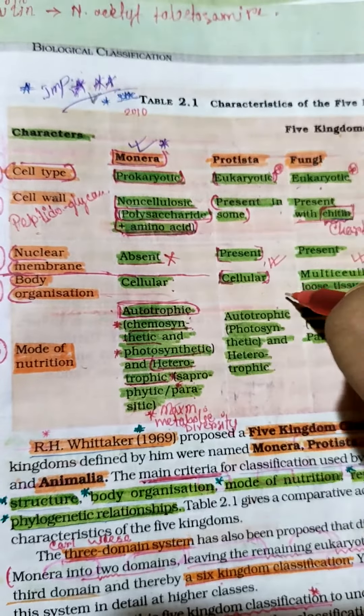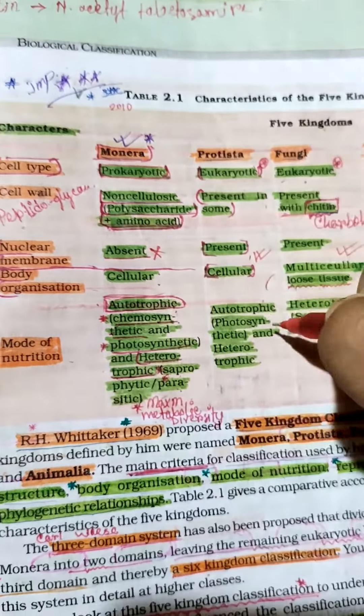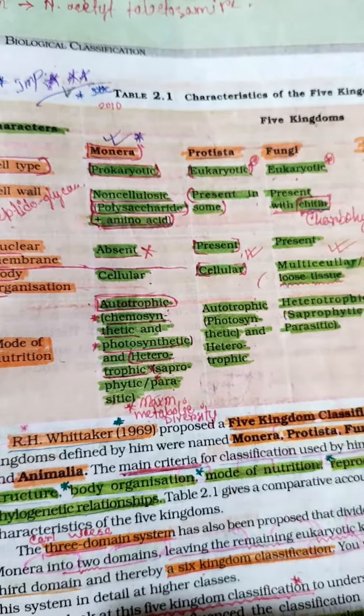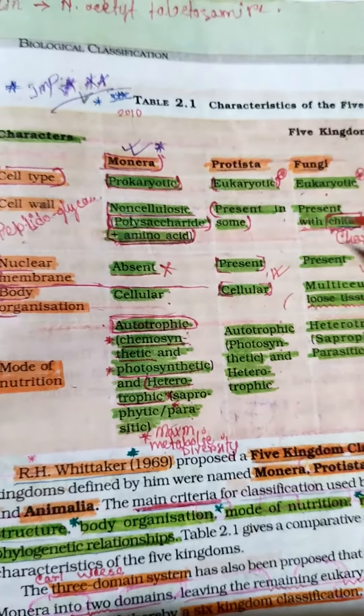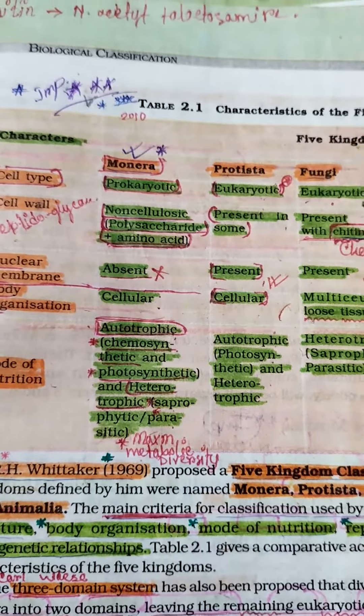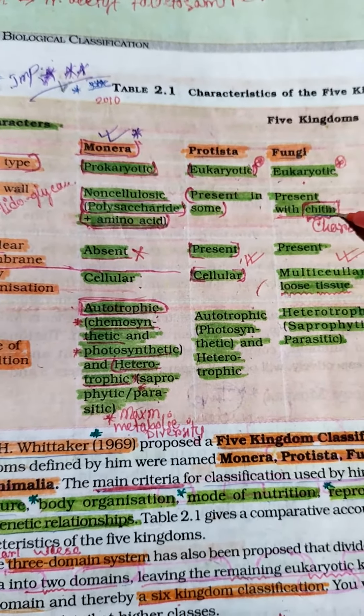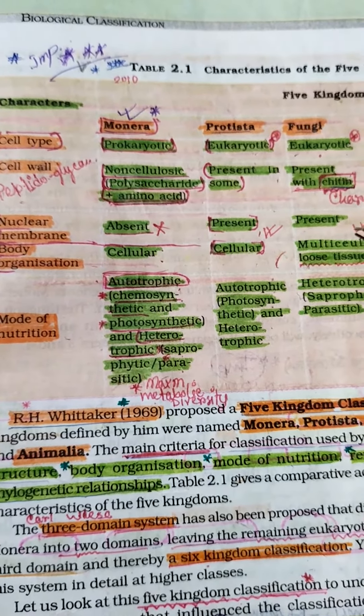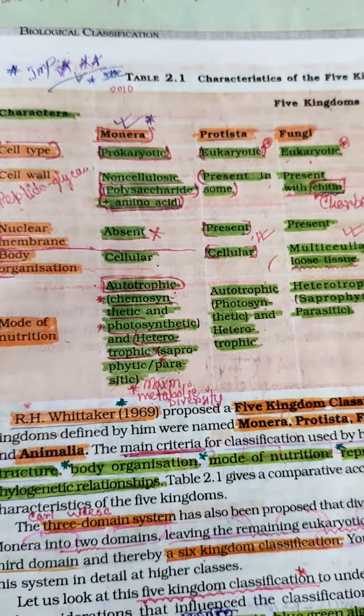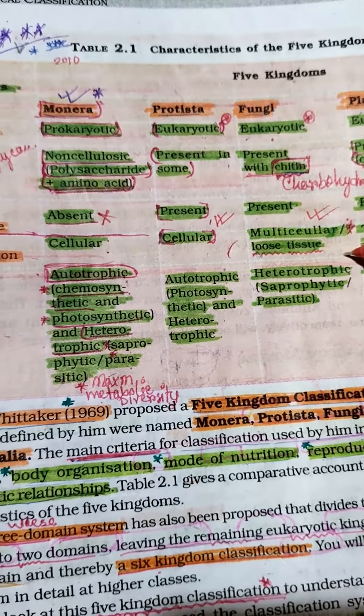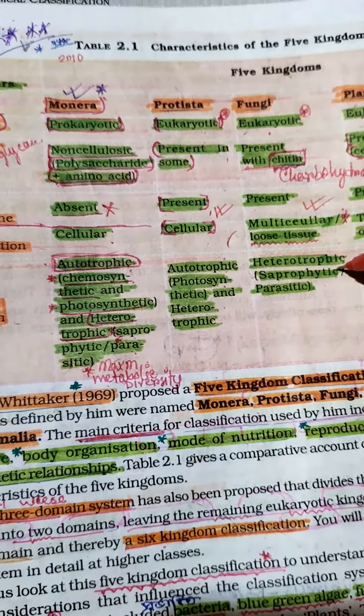Protista have cellular body organization with autotrophic photosynthetic and heterotrophic nutrition modes. Fungi have eukaryotic cell type, cell walls with chitin, nuclear membrane present, multicellular loose tissue organization, and heterotrophic mode of nutrition.